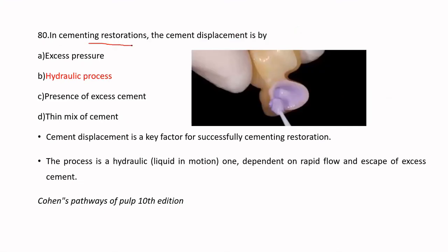In cementing restorations, cement displacement occurs by hydraulic pressure. The process is hydraulic — liquid in motion — dependent on the rapid flow and escape of excess cement. Excess pressure or the mere presence of excess cement alone are not the primary mechanisms; it is the hydraulic pressure that removes the excess cement.